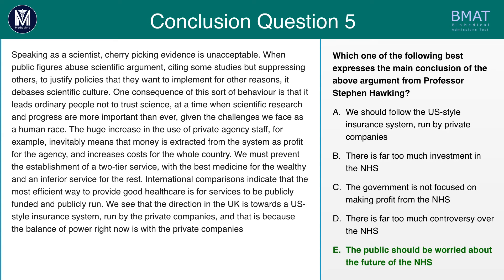You should have gotten E as the correct answer. The passage is relatively negative and critical about how the NHS is run. A — 'We should follow the US-style insurance system' — can't be right, as we're told it is running in the direction of it, not that Stephen Hawking agrees with it. B is also false, because words such as 'profit' and 'money investment from private agencies' suggest it's unlikely there is a lot of investment in the NHS. C — 'The government is not focused on making profit from the NHS' — is false as we are not given any indication of that. D — 'There is far too much controversy over the NHS' — we're only told there could be a potential two-tier service with the best medicine for the wealthy and an inferior service for the rest. Stephen Hawking is clearly not happy with the direction the NHS is going and is therefore trying to warn the public of the consequences that could follow.